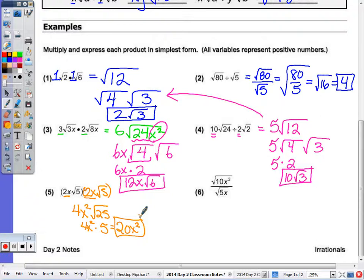In number 6, 10 divided by 5, that would be radical 2. And then x to the third divided by x, when we divide algebraically, we subtract the exponents. 3 minus the 1 is 2. Now x squared is a perfect square, so the square root of x squared is x, and I can't do anything with the radical 2.